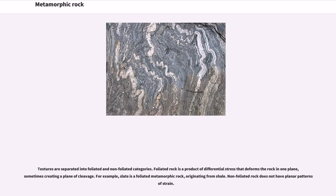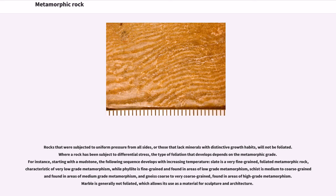Textures are separated into foliated and non-foliated categories. Foliated rock is a product of differential stress that deforms the rock in one plane, sometimes creating a plane of cleavage. For example, slate is a foliated metamorphic rock originating from shale. Non-foliated rock does not have a plane or pattern of strain. Rocks that were subjected to uniform pressure from all sides, or those that lack minerals with distinctive growth habits, will not be foliated.